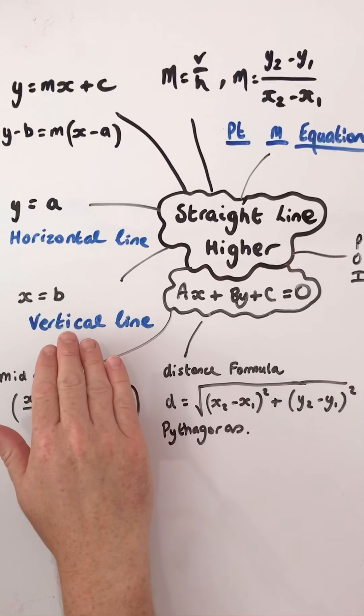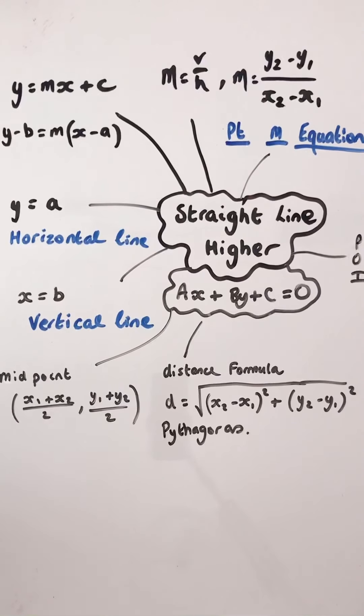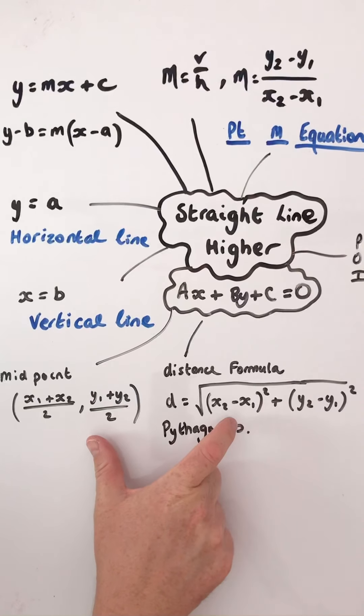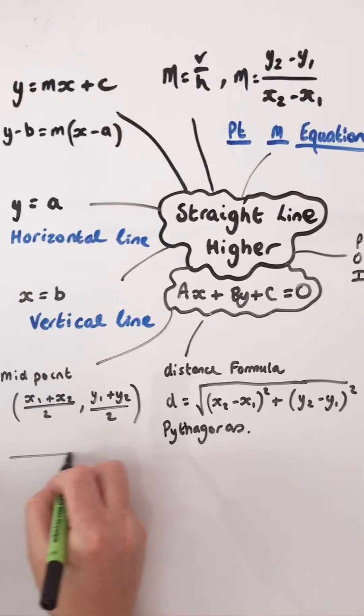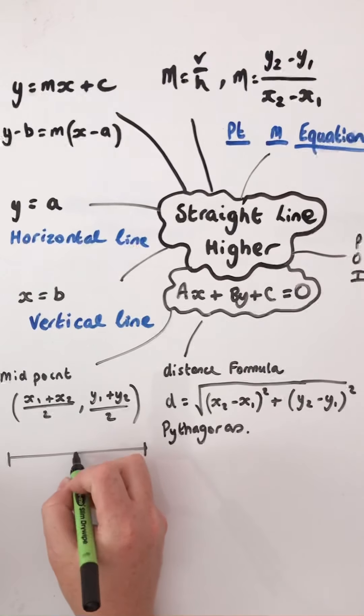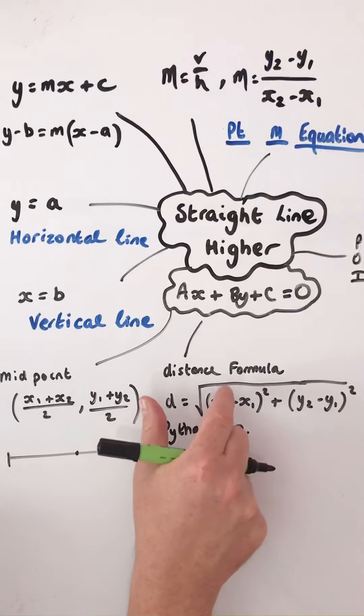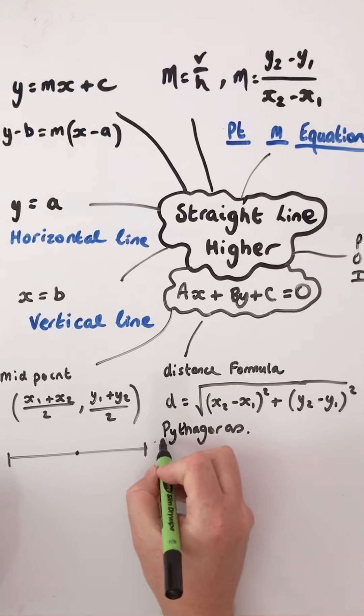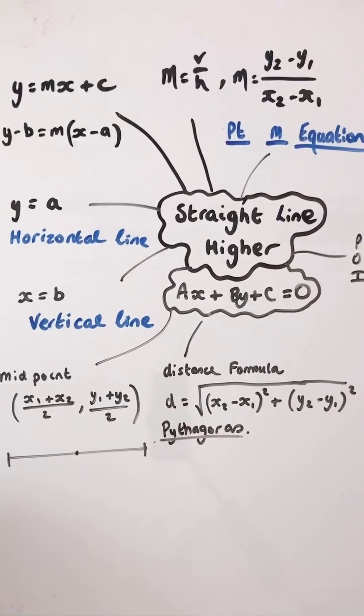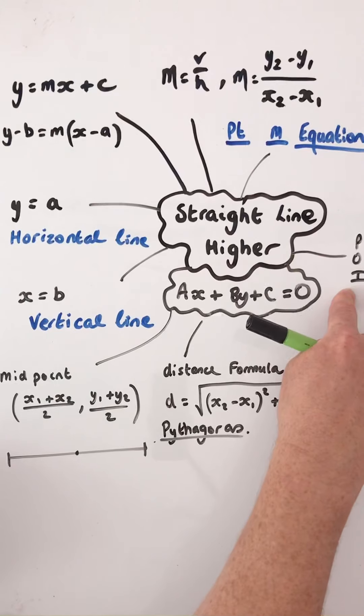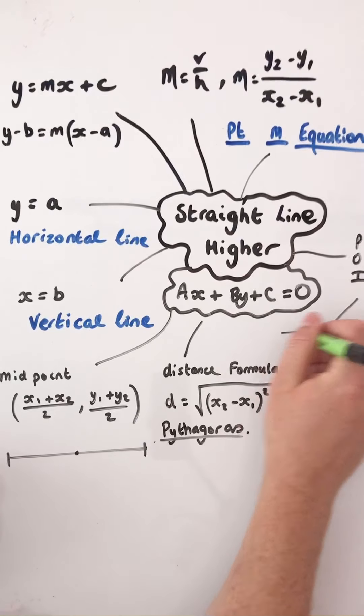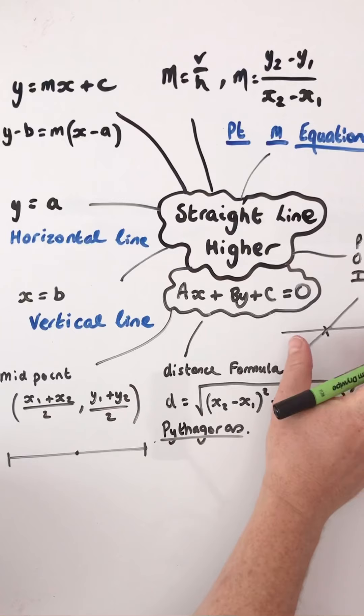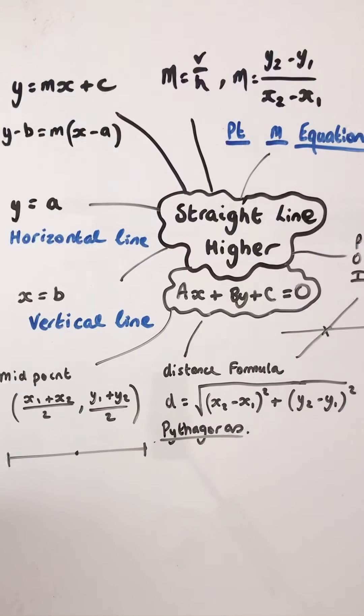So really what we've got here is a recap of national four, national five. We've got a couple of new formulae: midpoint of a line segment, the distance of a line segment, which is really Pythagoras, and bringing in your knowledge of points of intersection with straight lines. We'll do a lot of that at higher by substitution, rather than solving them simultaneously. Right, thanks for watching.